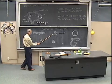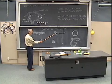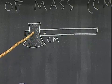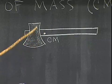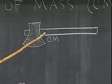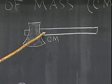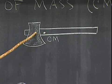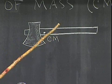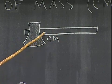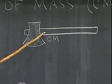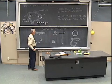Here's a hatchet. We see the center of mass is pulled by this extra weight of the head of the hatchet closer to the head and further from the geometric center. The center of mass would be located approximately at this position.